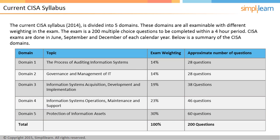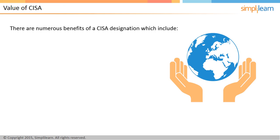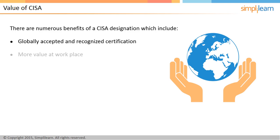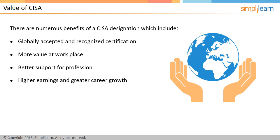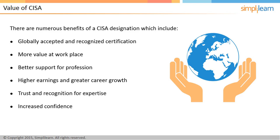Domain 5 covers protection of information resources and accounts for 30% of the CISA exam. When one attains the CISA certification, they acquire a globally accepted and recognized certification, as well as get more value at the workplace. They also become trusted consultants at the workplace, and they get recognized for their expertise, among many other benefits.